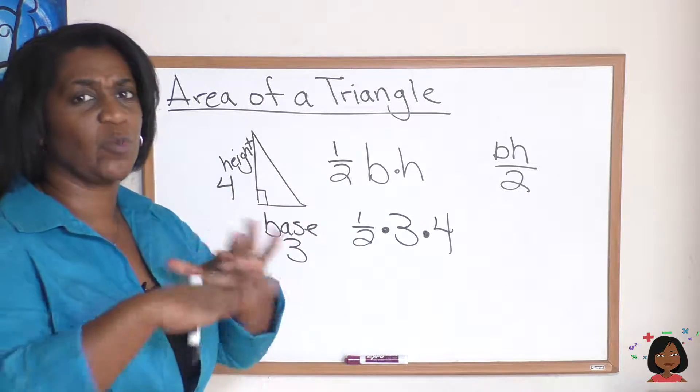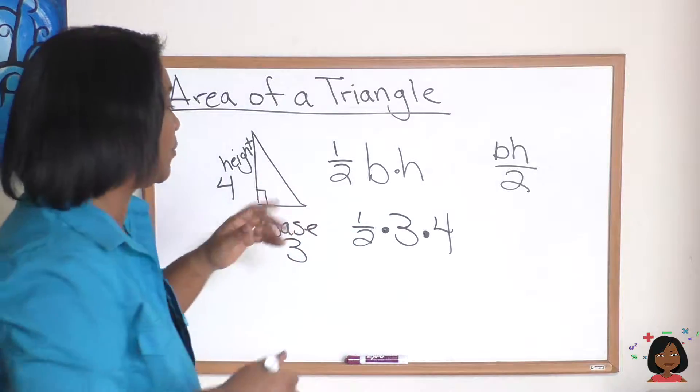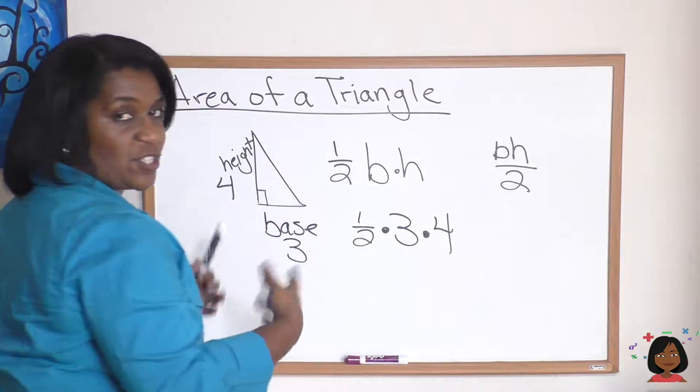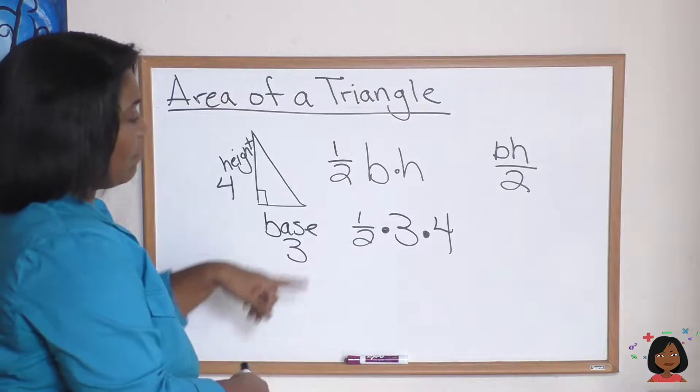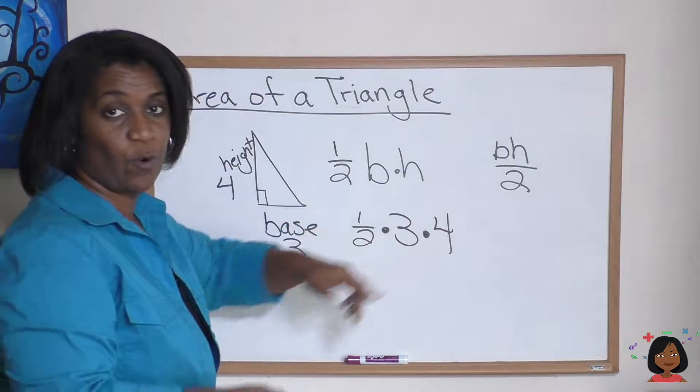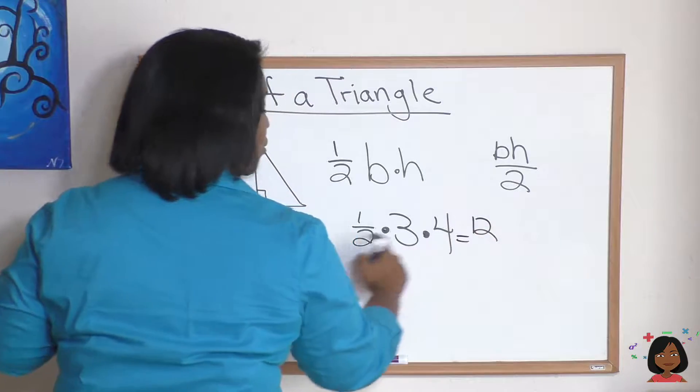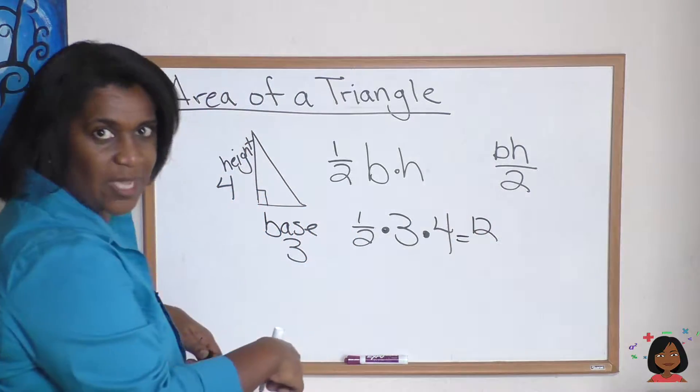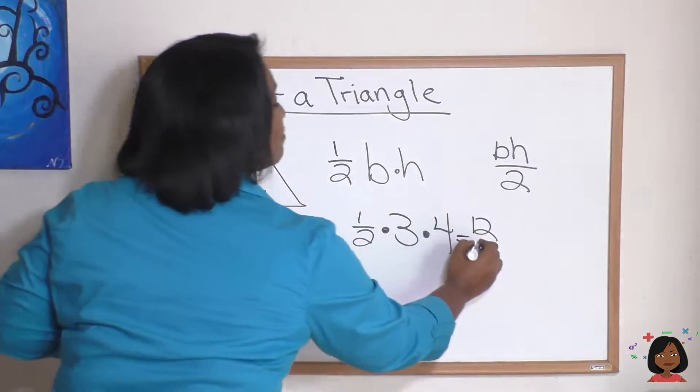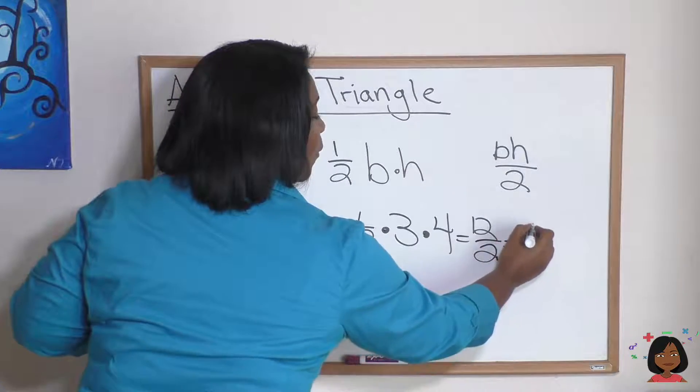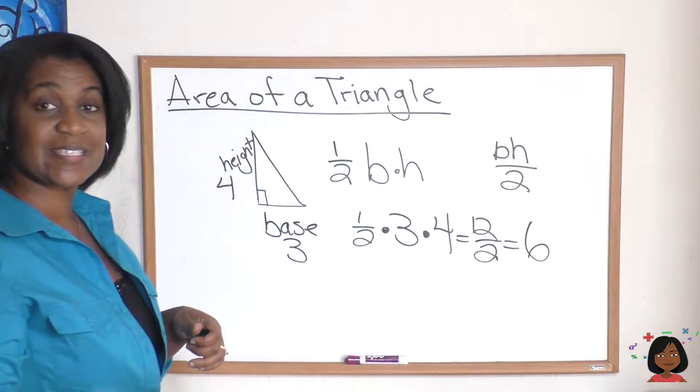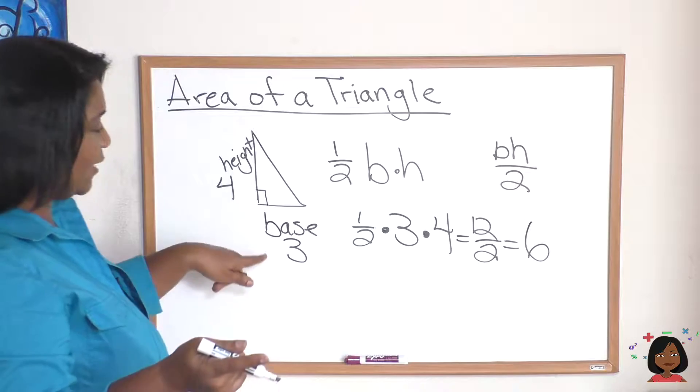Just for now, I'm going to show you multiplying everything across. Here we go: these threes and these fours, this three and four have a one on the bottom, so we're going to multiply one times three times four and we get twelve, and then two times one times one over two.